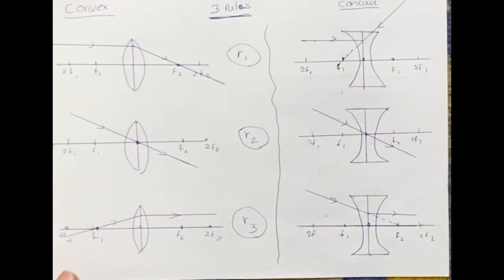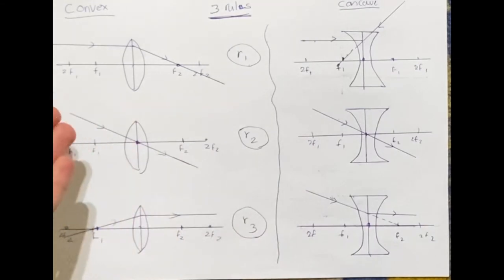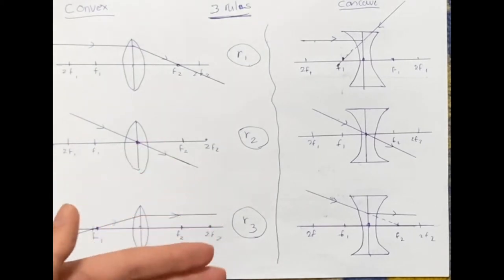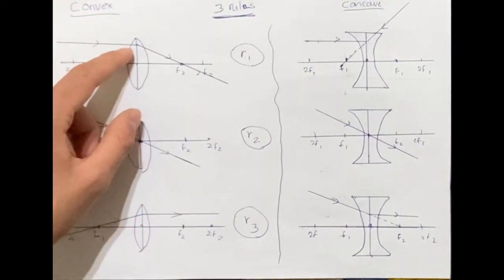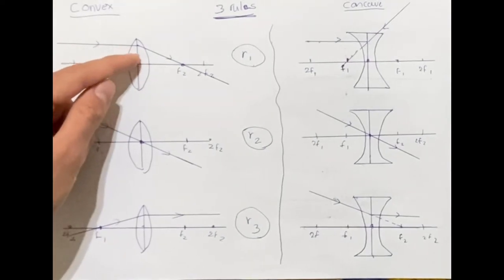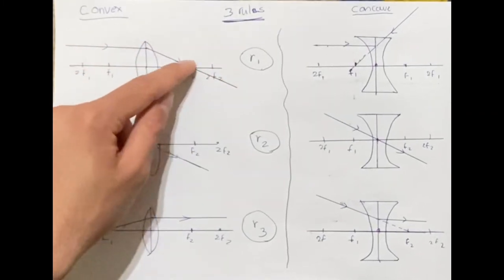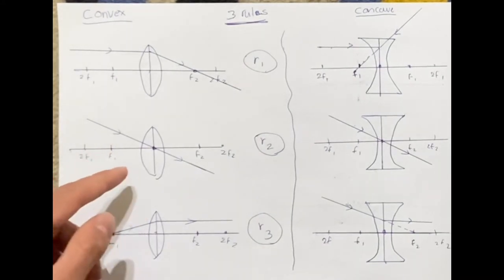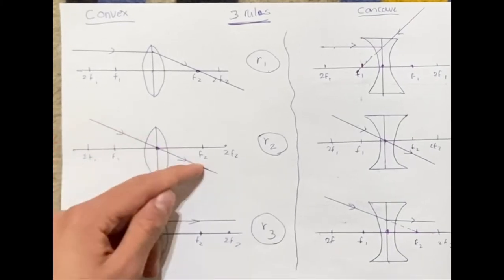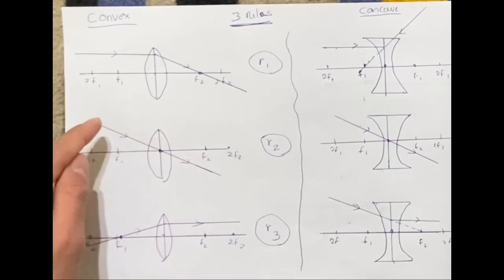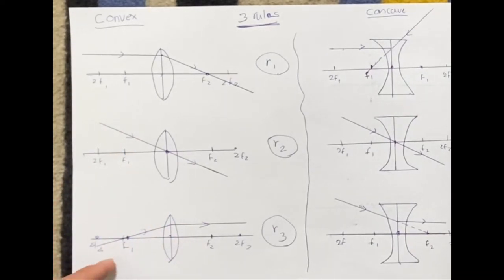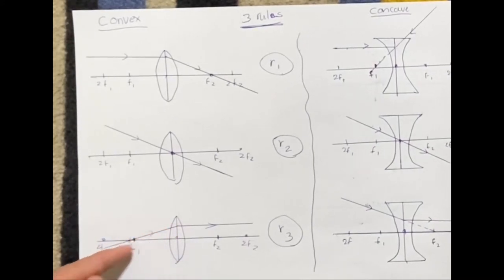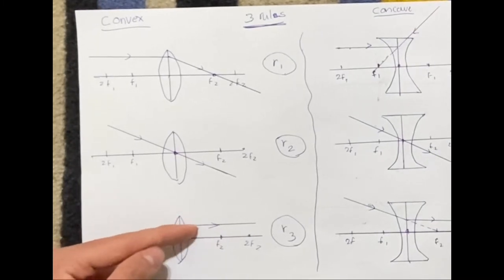Here are the three rules to follow in order for our image to be formed when we draw our ray diagram. For convex lens: the first rule is that a ray of light parallel to the principal axis is refracted passing through the focus F2. The second rule is that a ray of light passing through the optical center passes through undeviated. The third rule is that a ray passing through focus F1 is refracted parallel to the principal axis.